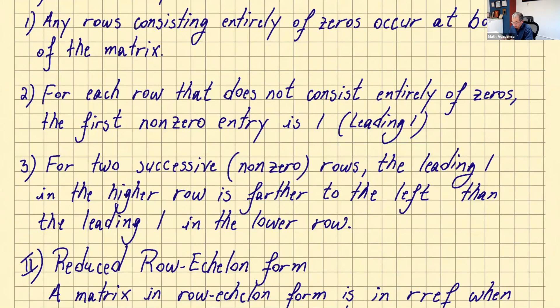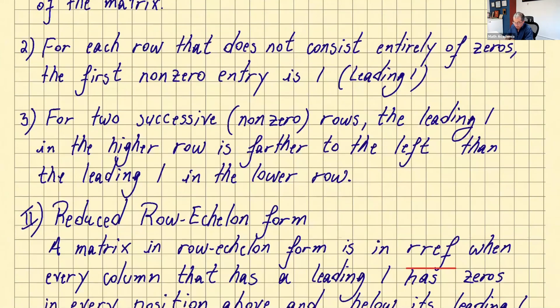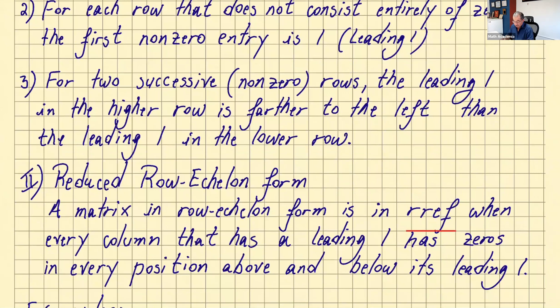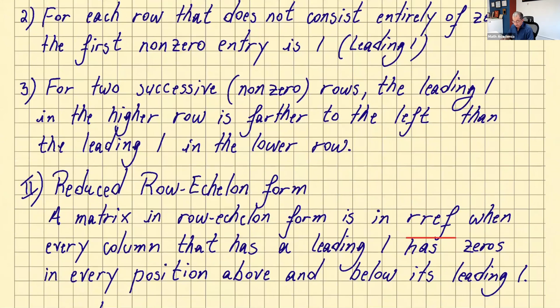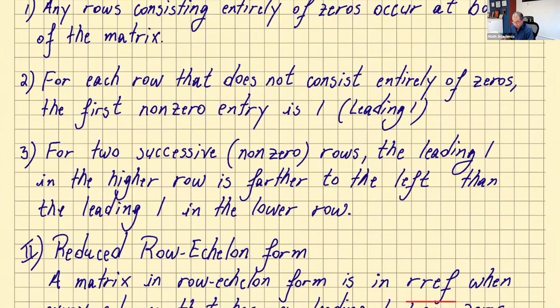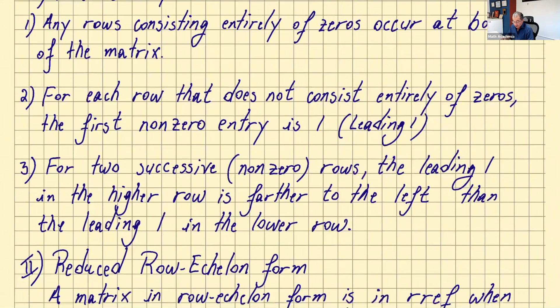Condition three: for two successive non-zero rows, the leading one in the higher row is farther to the left than the leading one in the lower row. Those are the three conditions for row echelon form.